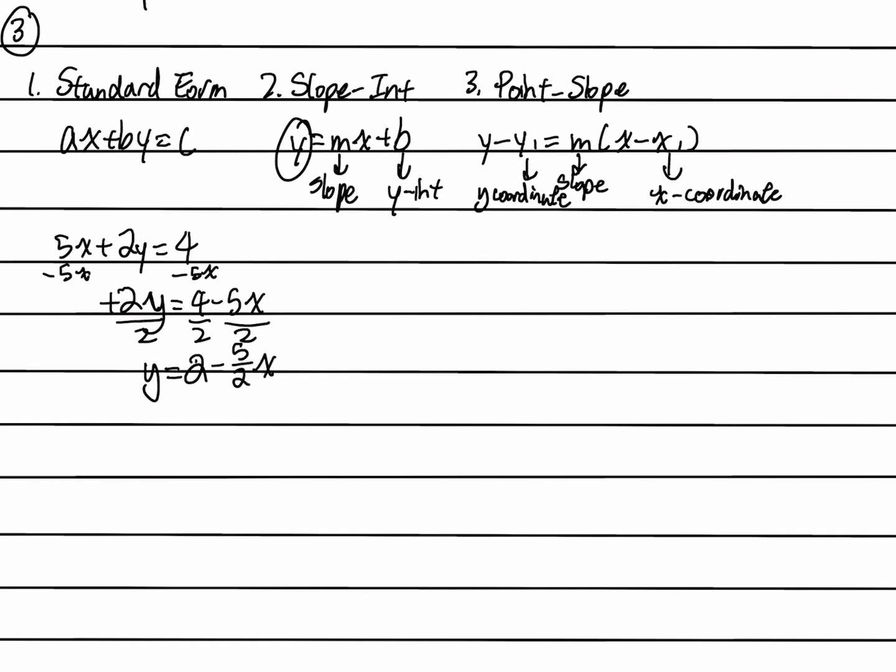Finally, transforming that into slope-intercept form, we get y equals negative 5 over 2x plus 2. So this is it in slope-intercept form.